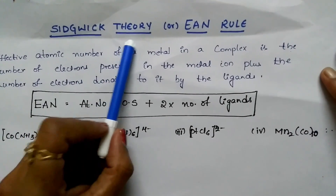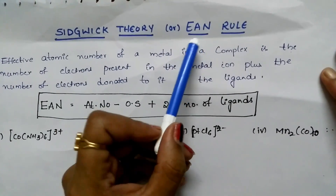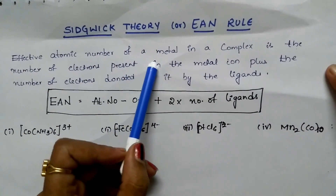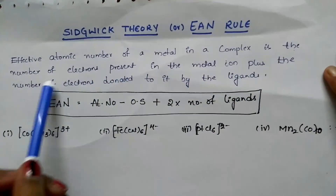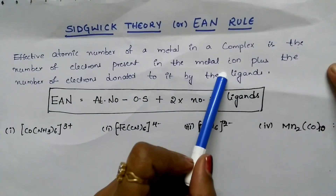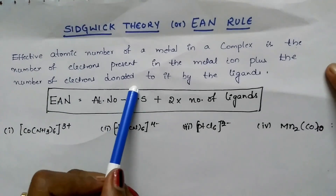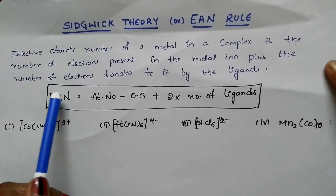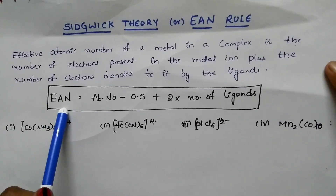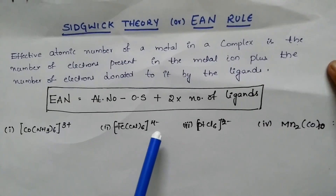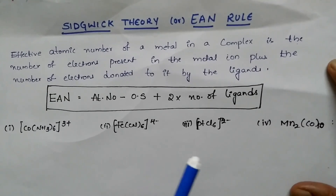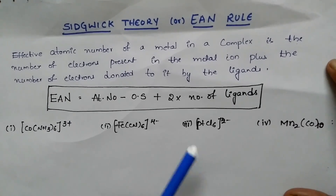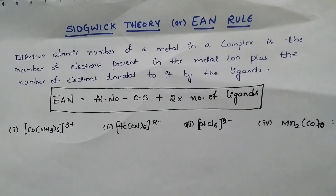Sidgwick proposed a theory known as Sidgwick theory, which is also known as the Effective Atomic Number rule. The effective atomic number of a metal in a complex is the number of electrons present in the metal ion plus the number of electrons donated to it by the ligands. If the EAN of any metal in a complex ion is equal to the atomic number of the nearest noble gas element, then that complex ion is most stable in nature.